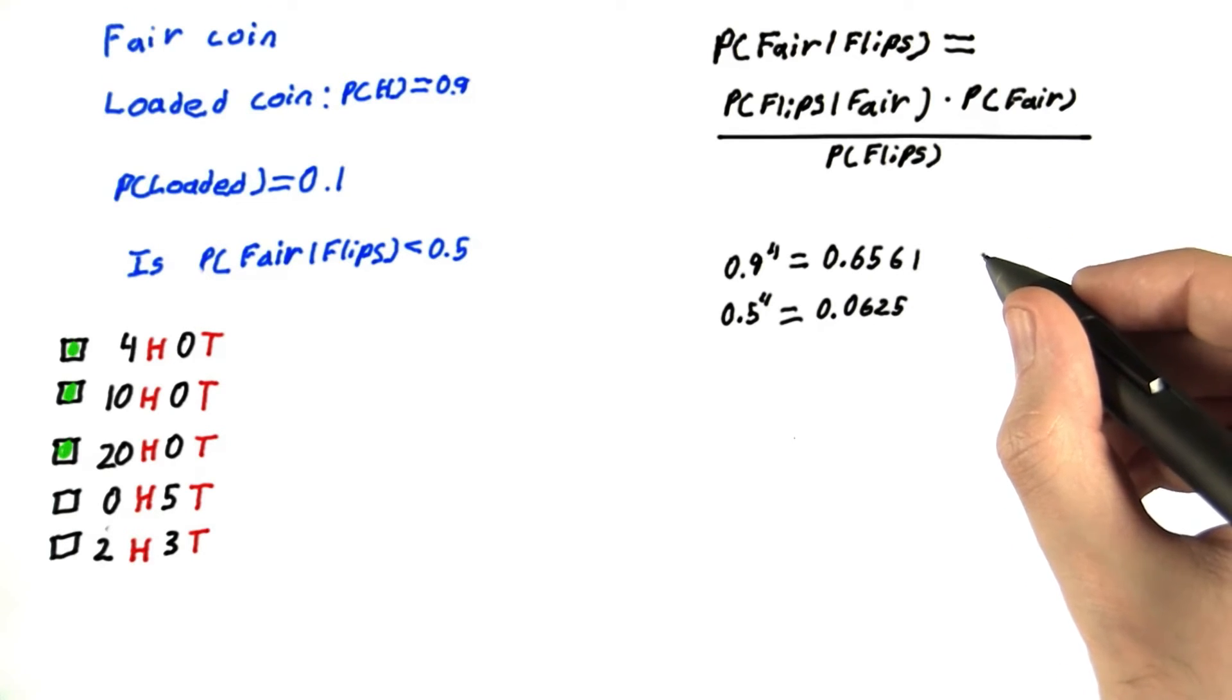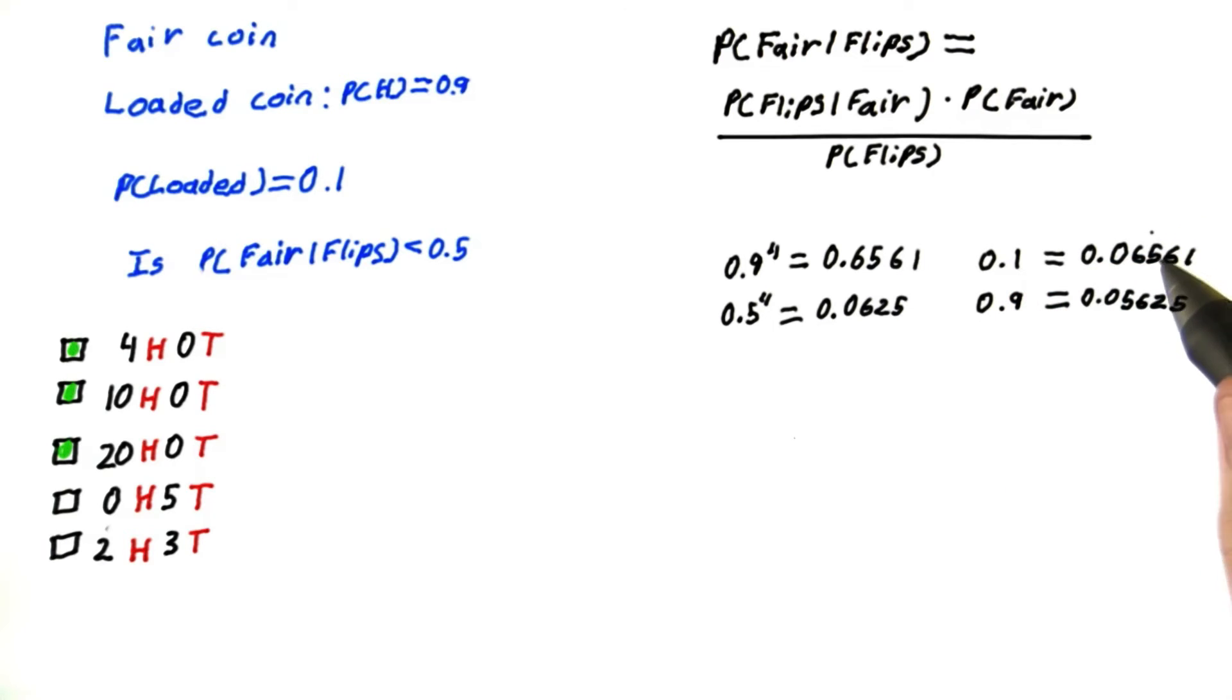So we can see here the probability of having a loaded coin times the probability of the flips given the loaded coin is 0.06561. And the probability of having the same flips with a fair coin times its probability is 0.05625.